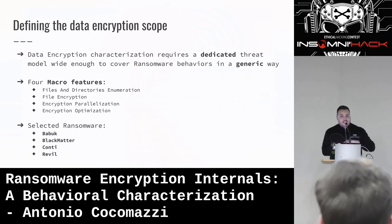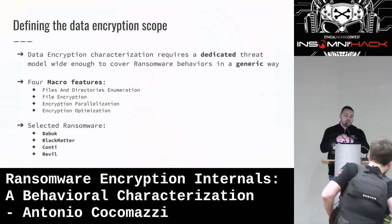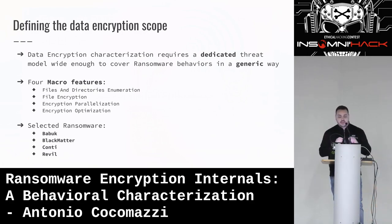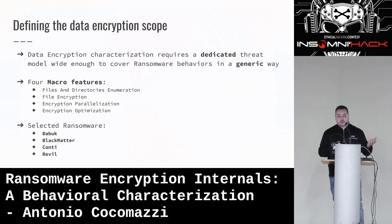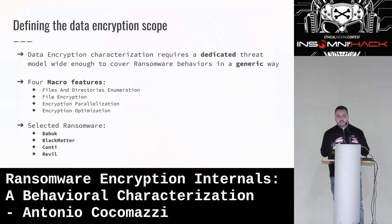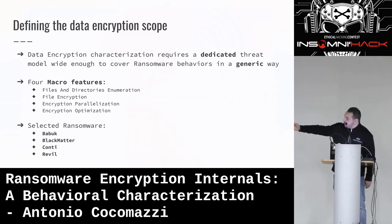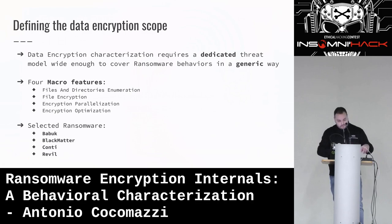The scope was the data encryption stage, so I was not focusing on the entire kill chain of the ransomware attack but only on the locker payload — the one that is disrupting the system. The problem I had is that the threat models available at the time, like the MITRE model, were not wide and generic enough to categorize ransomware behavior. So I found that the data encryption stage can be seen as four macro features: file and directory enumeration, file encryption, encryption parallelization, and encryption optimization.